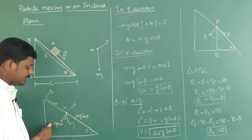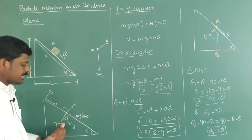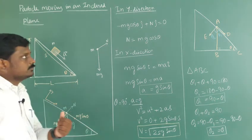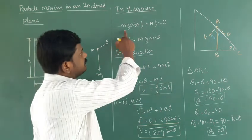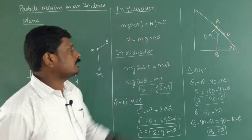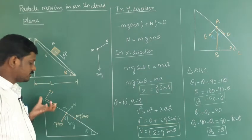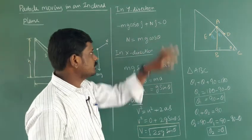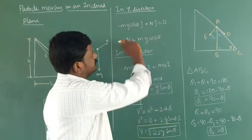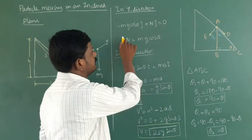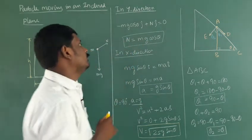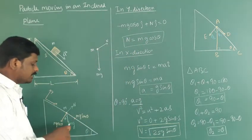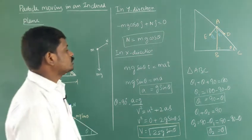Along y: minus mg cos theta j-cap plus N j-cap equals zero, since there is no acceleration in the y direction. Rearranging, we get N equal to mg cos theta. So the normal force exerted by the surface is equal to mg cos theta.